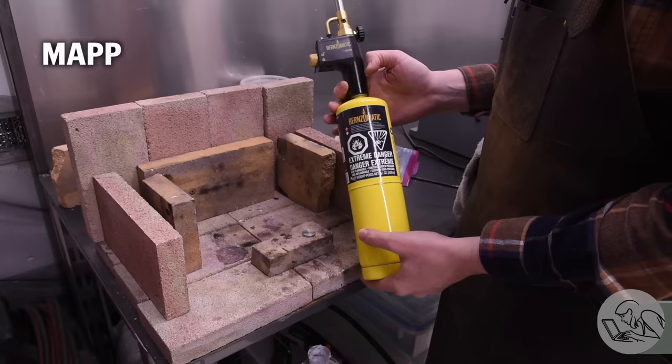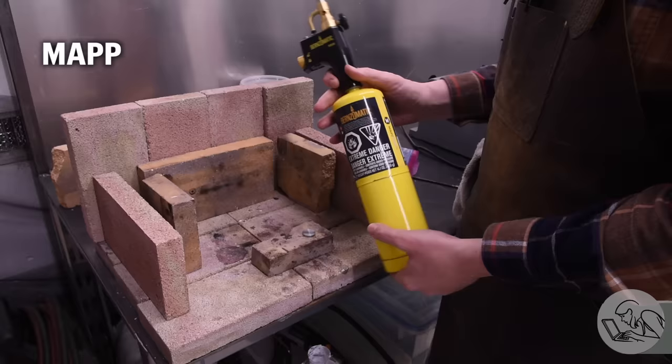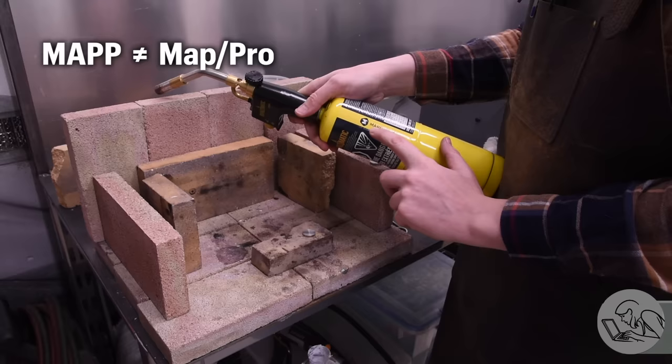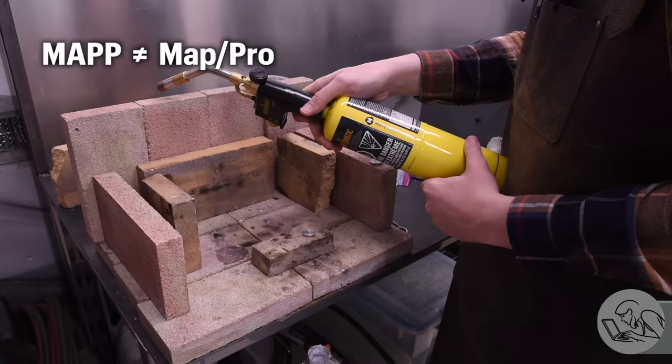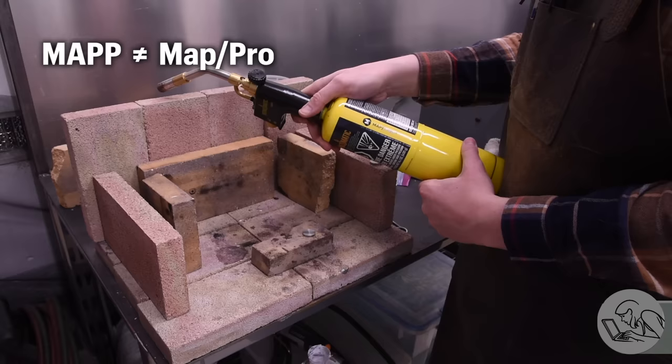What they have nowadays is called MAP Pro. Now, MAP Pro is actually just propane. It burns at the same temperature, give or take, as propane, but they've added propylene to it, which makes the gases transfer their heat into the material quicker, but it does not actually burn hotter.